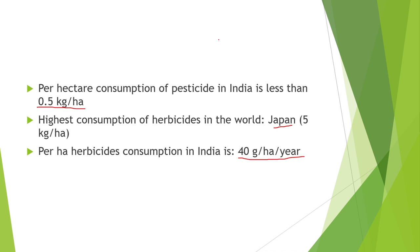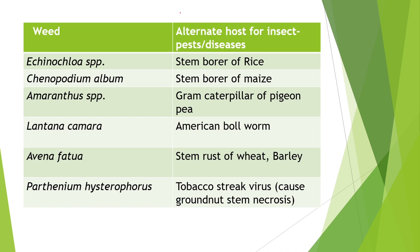Here a table is given which shows weeds with their alternate hosts for insect pests and diseases. These pests and diseases infest main field crops, but certain weeds also act as alternate hosts. The first weed is Echinochloa species, which we have seen in rice — its alternate host is the stem borer of rice. Second is Chenopodium album, found in maize fields, and its alternate host is the stem borer of maize.